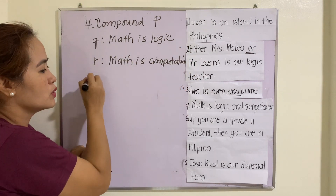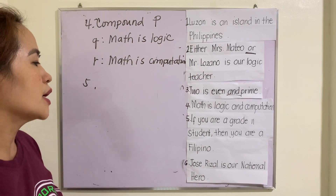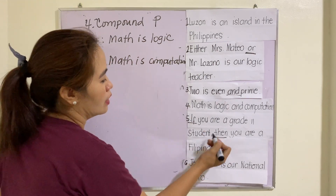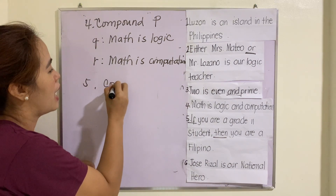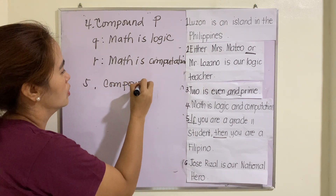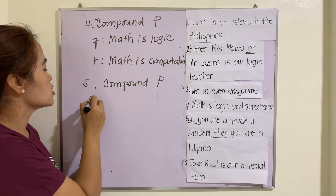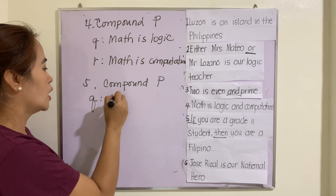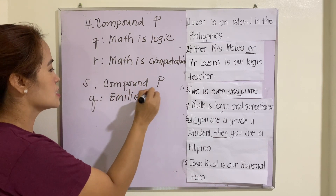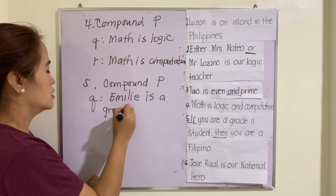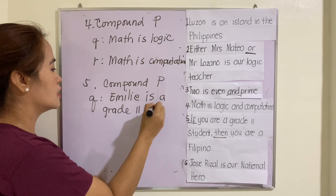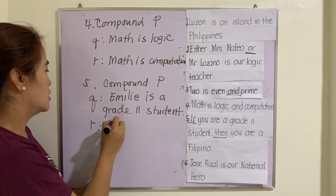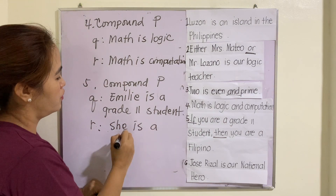Number five: 'If you are a grade 11 student, then you are a Filipino.' We use the connector 'if-then', therefore this one is a compound proposition. The two propositional variables are: q - 'You are a grade 11 student', and r - 'You are a Filipino.'